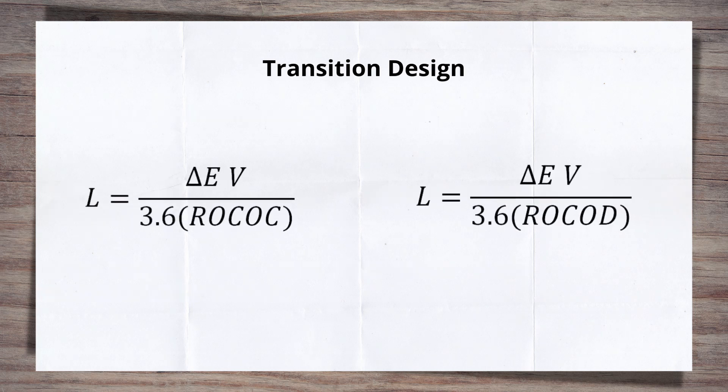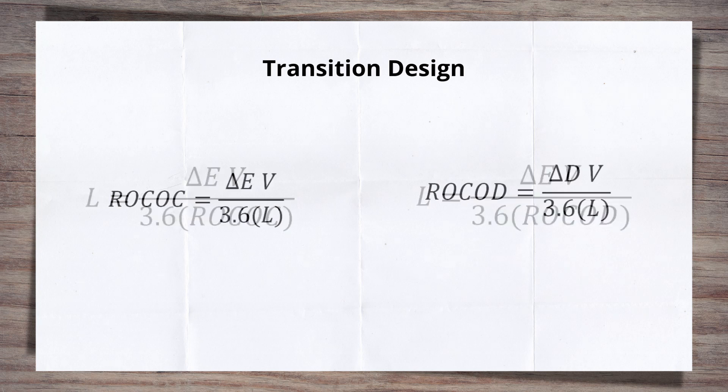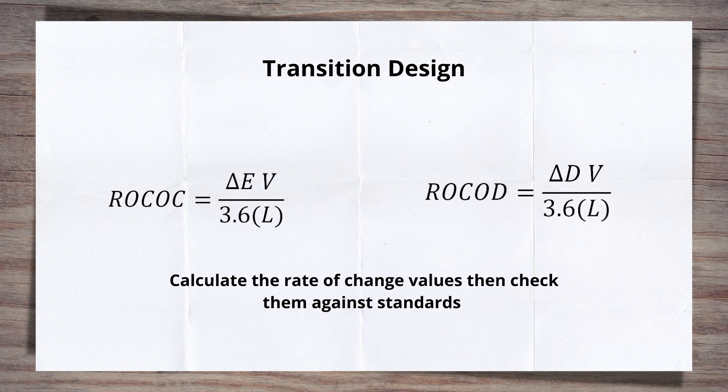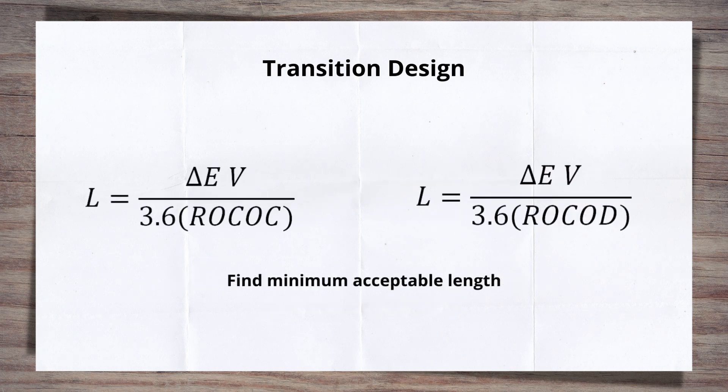The equations shown are used when designing a transition. They can be used in two main ways. Using a length to solve for the rate of change that can be checked against the standard, or using rate of change values and solving for the length. This can be used to find the minimum acceptable lengths by the standard.